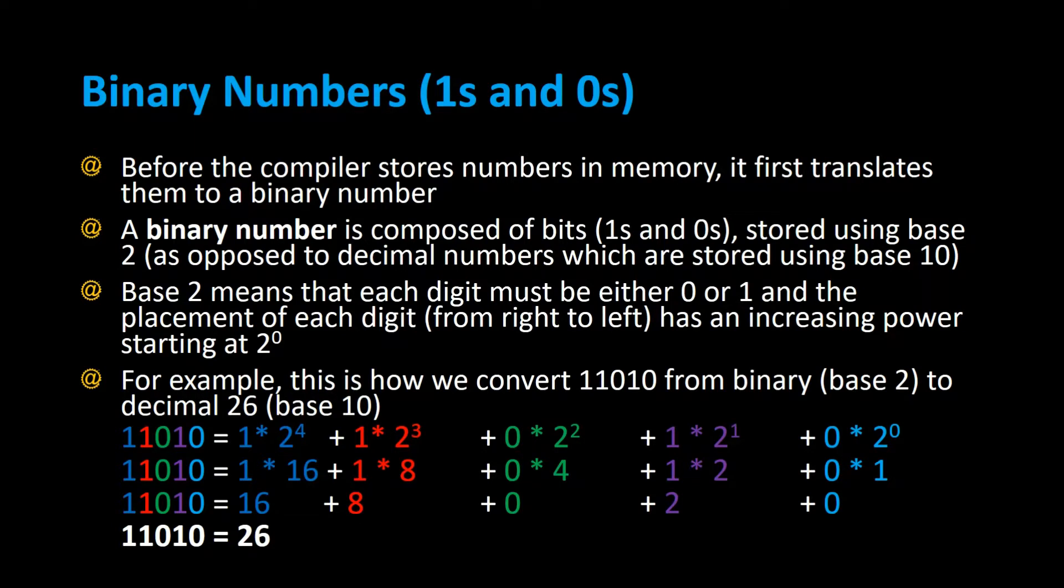Binary numbers, ones and zeros. Before the compiler stores numbers in memory, it first translates them to a binary number. A binary number is composed of bits - those are ones and zeros - and they're stored using base 2, as opposed to decimal numbers which are stored using base 10.